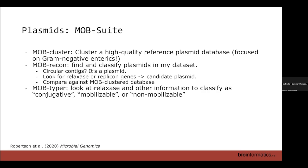And then there's MOB Typer, which looks at the relaxase and other information to figure out whether your plasmid falls into one of three major classes. Conjugative means it has all the facilities to replicate itself and transfer itself to a recipient — all those genes, including pili formation, are on the plasmid. Mobilizable means it's not fully self-transmissible, but if the conjugative genes exist on another co-resident plasmid, it can be mobilized. Non-mobilizable means it can replicate and descend into daughter genomes through vertical inheritance, but may not be transmissible through lateral gene transfer.